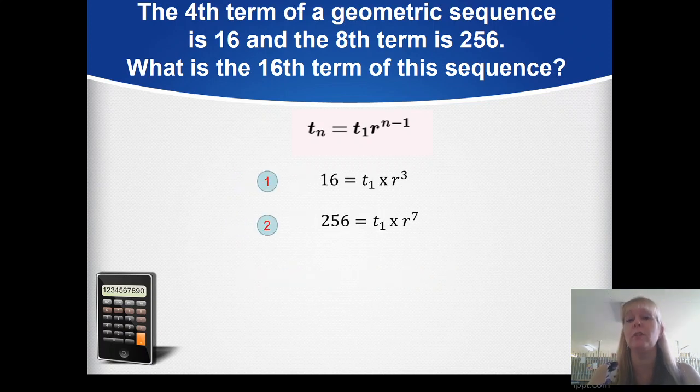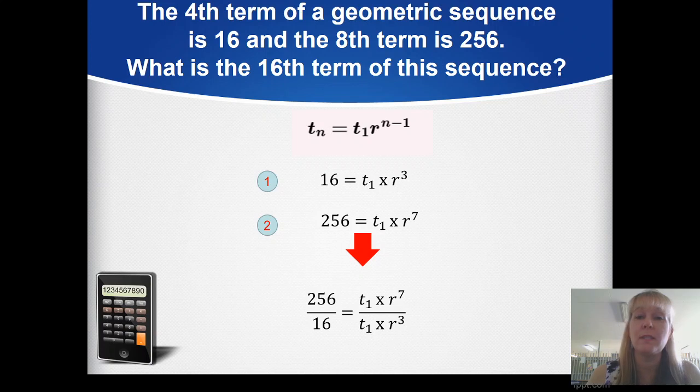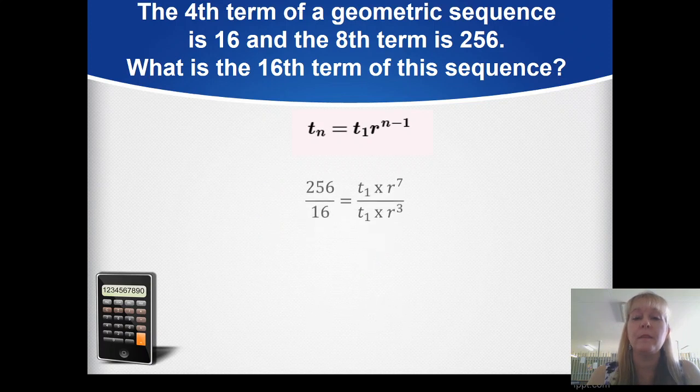Here are the two original equations. I'm going to divide the left side by itself and the right side by itself. We now have 256 divided by 16 on the left, and everything on the right side will be divided in the same order.